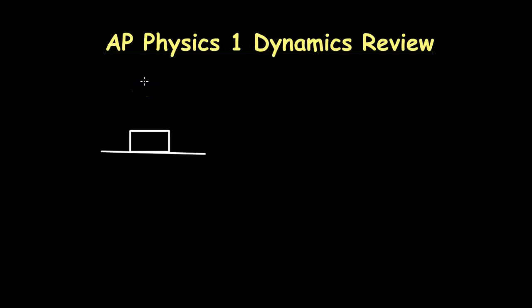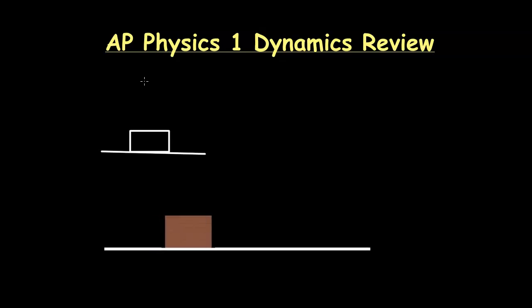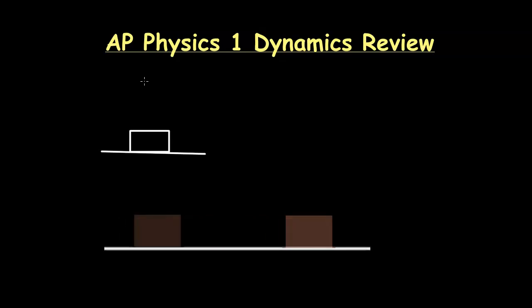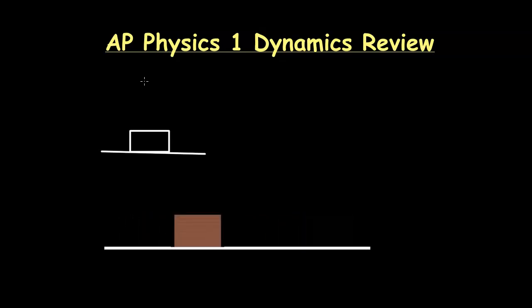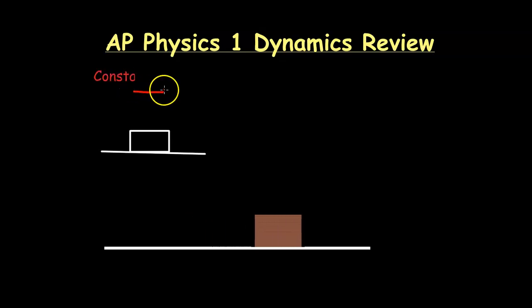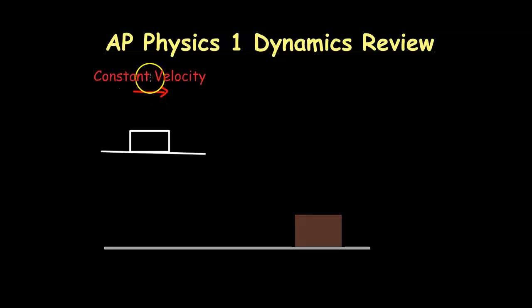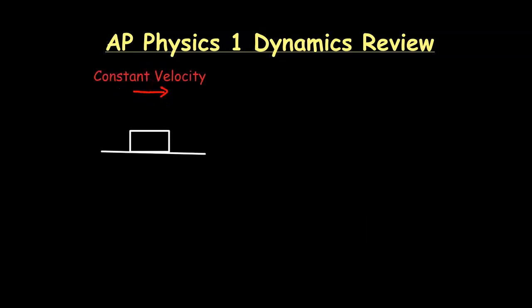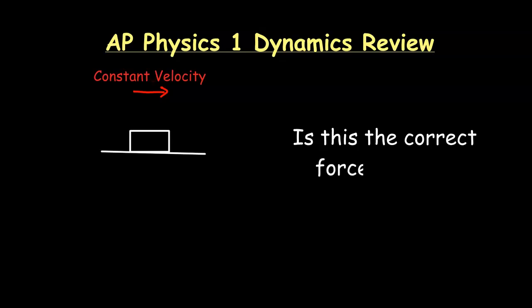In this video, we're going to be reviewing dynamics for AP Physics 1. I'm going to start with this box on the ground, and it is a smooth surface. The box is going towards the right at constant velocity. Now I'm going to draw some forces acting on the box, and I'd like you to see if you can figure out if this is the correct force diagram for this box.